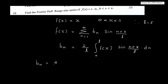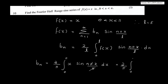So bn is equal to 2 by pi, integral 0 to pi. f of x is x, and sin n pi x by pi dx. Pi gets cancelled, giving us 2 by pi, integral 0 to pi, x sin nx dx.